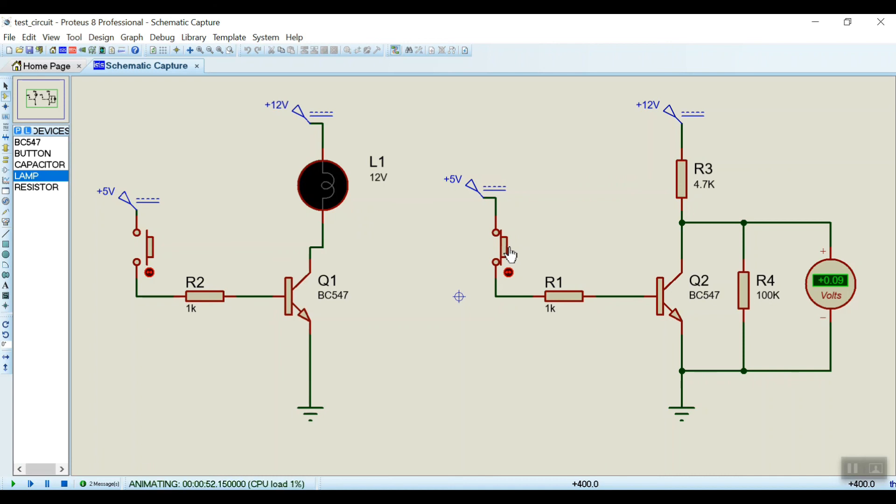That means transistor has started conducting and that's why it becomes a short circuit and current is unwilling to go through this path 100k. When I am pressing this button, see the voltage is reduced to zero and now this is the almost full voltage.